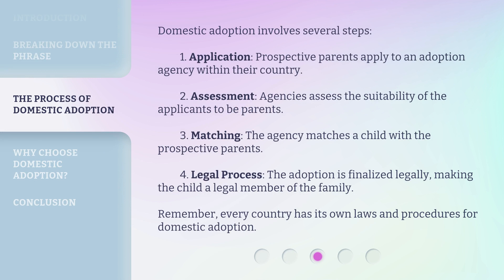Domestic adoption involves several steps. 1. Application: prospective parents apply to an adoption agency within their country. 2. Assessment: agencies assess the suitability of the applicants to be parents. 3. Matching: the agency matches a child with the prospective parents. 4. Legal process: the adoption is finalized legally, making the child a legal member of the family. Remember, every country has its own laws and procedures for domestic adoption.